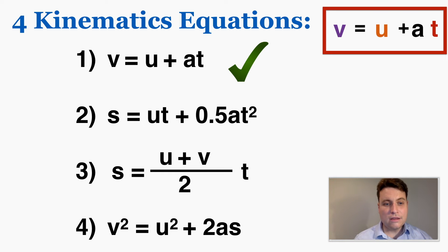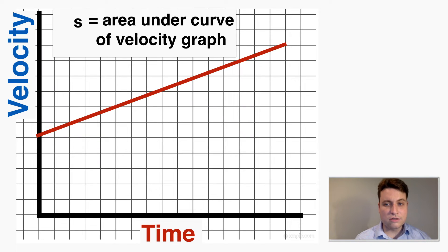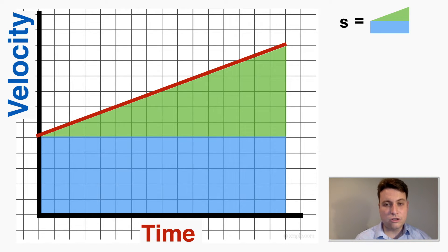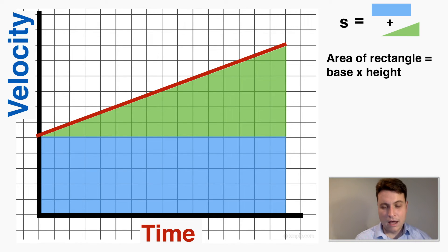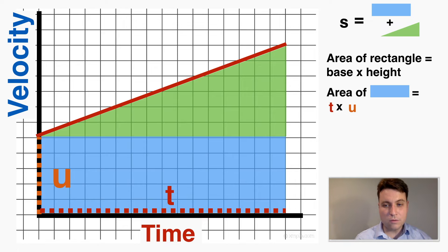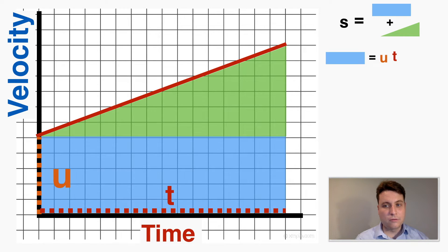The area under the curve of a velocity graph equals the displacement of the object. I need to find an equation for that area to prove the second equation. I'll split the area into two parts: a right triangle and a rectangle. The total displacement equals the area of the triangle plus the area of the rectangle. The rectangle has height equal to the initial velocity u and base equal to time t, so its area is u times t.